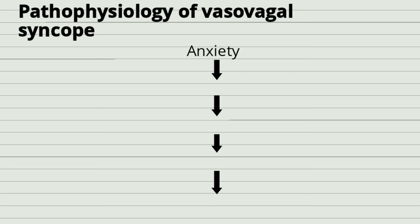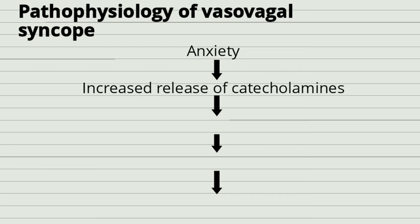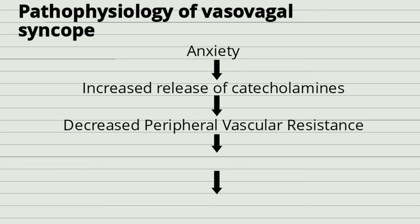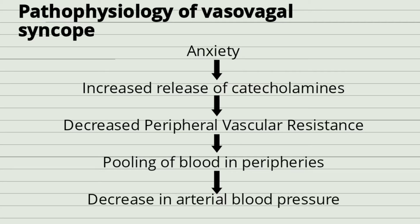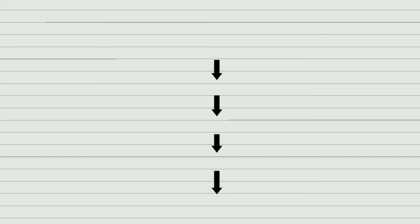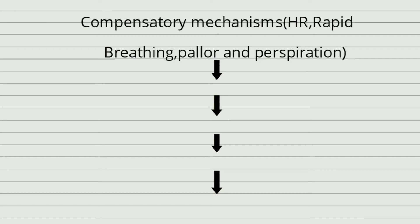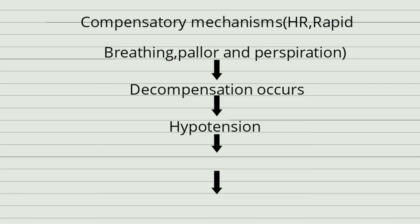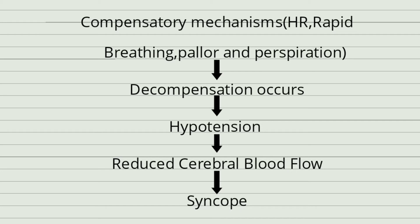Suppose a patient is coming to you for a dental extraction and is highly anxious. There is increased release of catecholamines like adrenaline, which leads to decreased peripheral vascular resistance and pooling of blood in the peripheries, resulting in decreased arterial blood pressure. This decrease in arterial blood pressure leads to compensatory mechanisms including increased heart rate, rapid breathing, pallor, and perspiration. Soon decompensation occurs and there is hypotension, reduced cerebral blood flow, and thus syncope occurs.